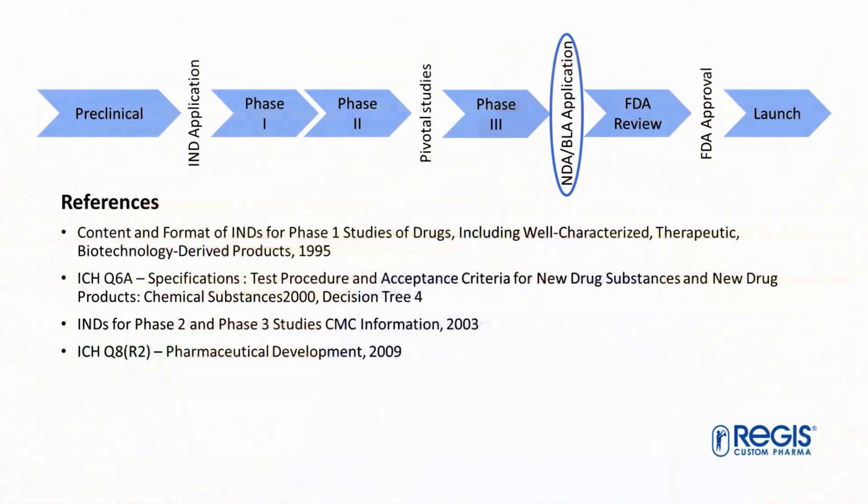By the time of your NDA filing, ICH Q8 Pharmaceutical Development states that you need to understand the solid state properties, which need to be identified and discussed. It also states that any potential effects for your API and how they affect your drug product performance should be used to justify your API specifications, or the lack of them.